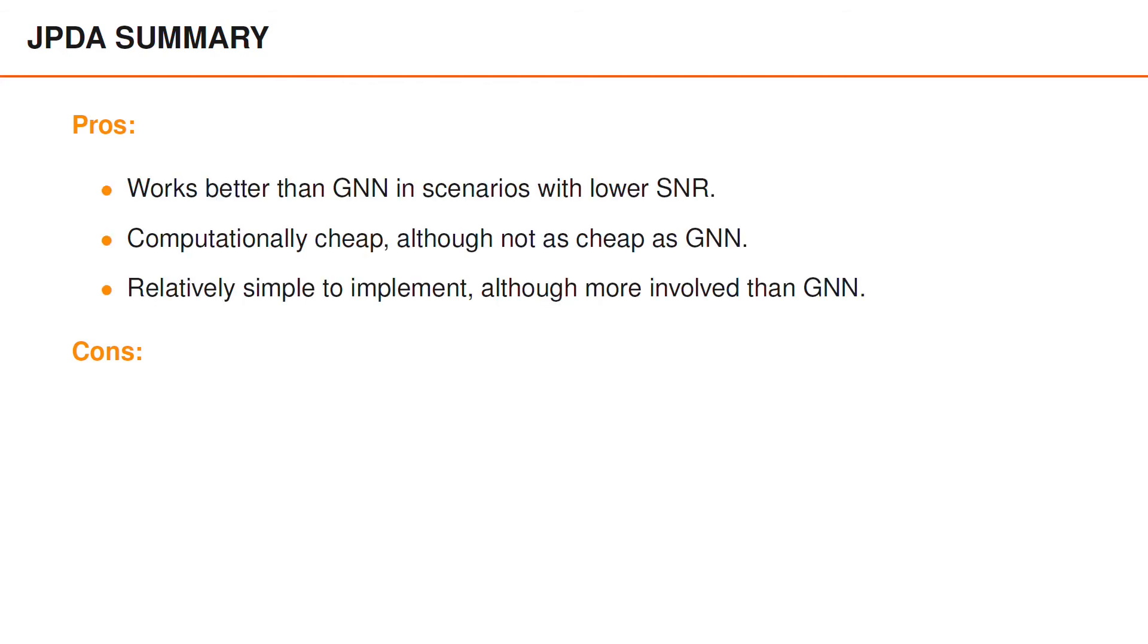Let's conclude with some pros and cons for JPDA. In general, JPDA works better than GNN in scenarios with lower SNR. JPDA is still a fairly computationally cheap tracking algorithm, although the computational cost is a bit higher than GNN. It's also relatively simple to implement, although not quite as simple as GNN. One downside with JPDA is that it can give poor tracking results when the tracking scenario is complicated, for example, if the true objects are very close to each other.